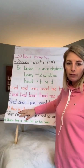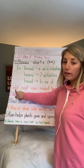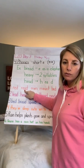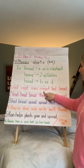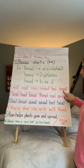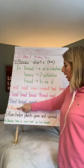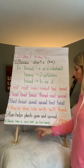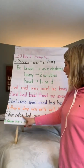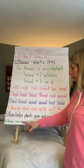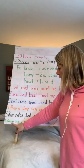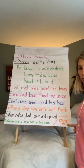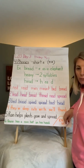You guys know what to do here. Red as in the color. Red as in 'I read that story this morning.' Men. Bed. Bread. Try two, three, and four on your own. Five: 'Rain helps plants grow and spread.' Six: 'Quinn has a rain hat on his head.' Please complete Reader's Notebook page 68 when you're done with this.